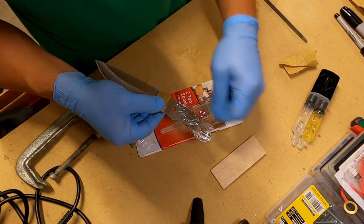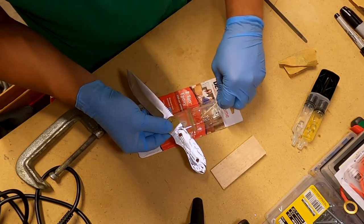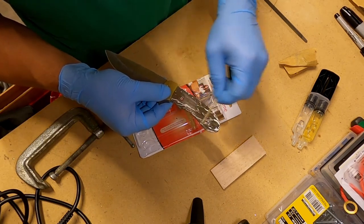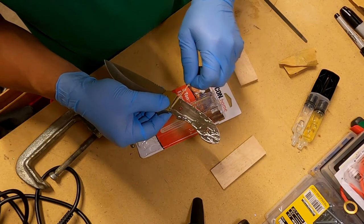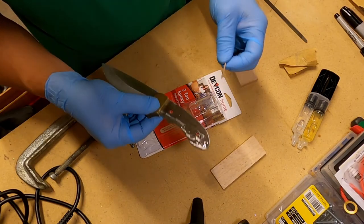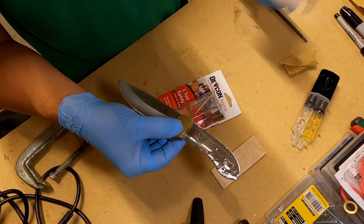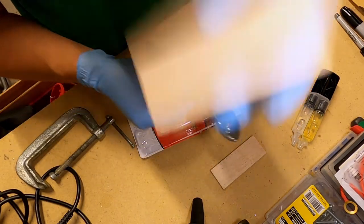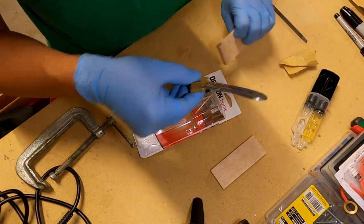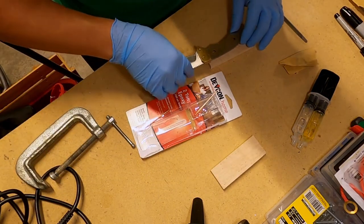Now I'm going to spread this liberally all over the tang. We can clean up whatever we don't use, but I really want to make sure that we get a nice coat on here so that the handle holds and we don't have any failures in the future. You can see I got a real good amount on there. I'm going to take the handle piece.